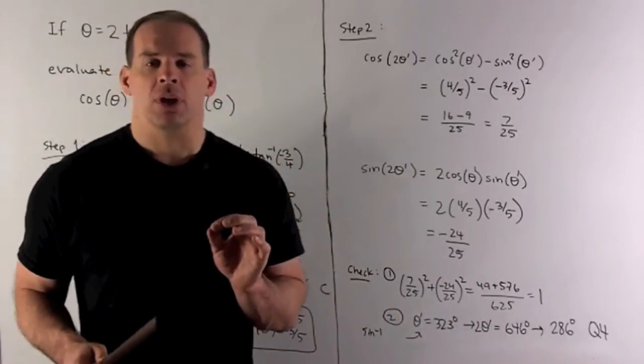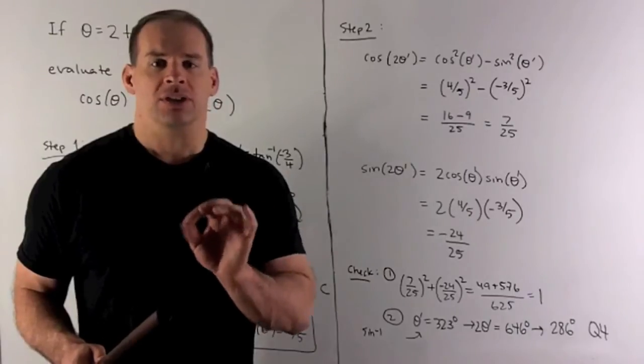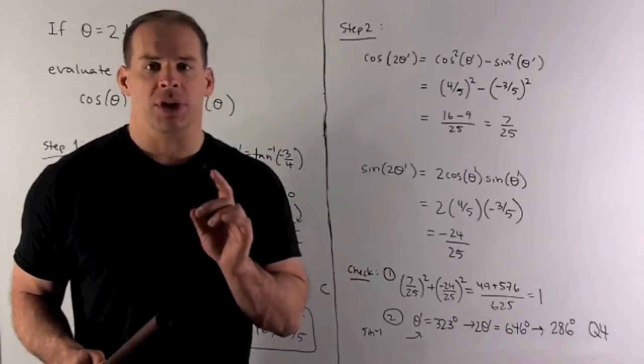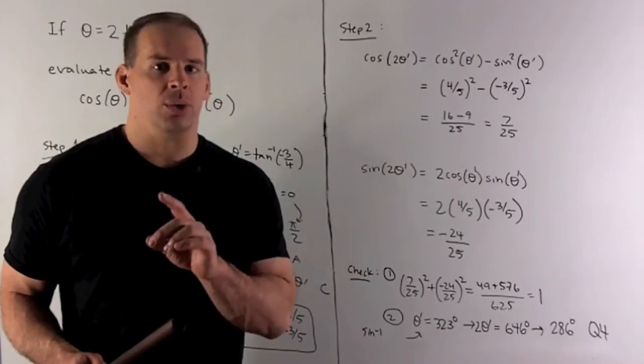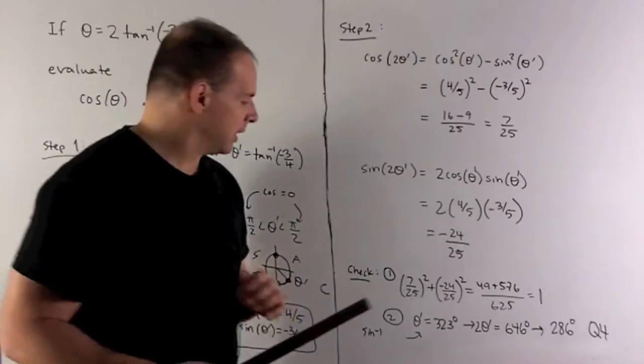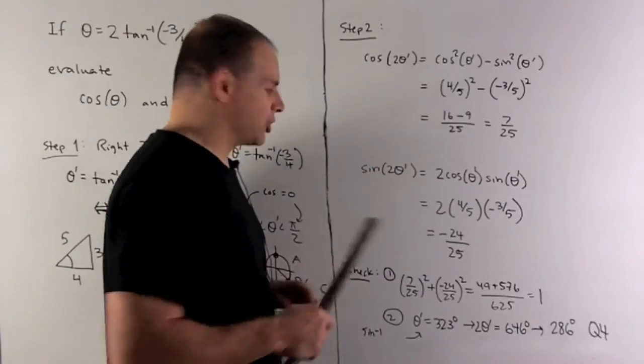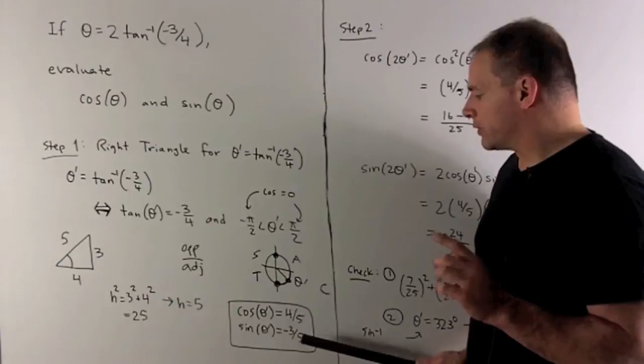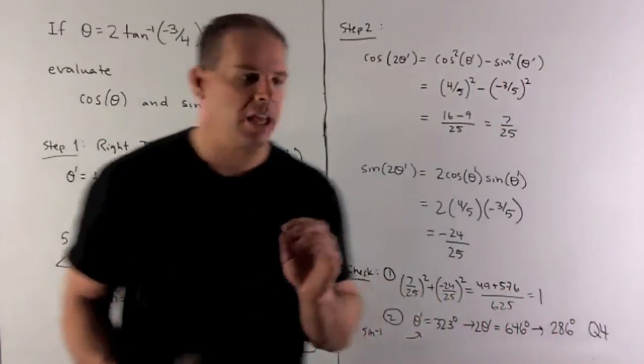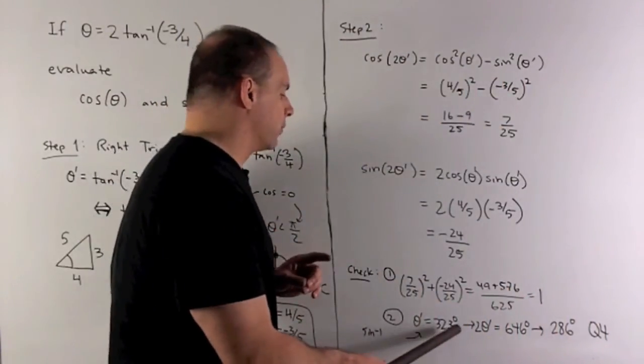Another thing I could do, we could check and see what's happening with doubling the angle. So what we'll do is, we'll figure out what our original angle was. So if I use inverse sine, take inverse sine on our sine, the original sine, that was minus three-fifths. So if I take inverse sine in my calculator, I get 323 degrees.